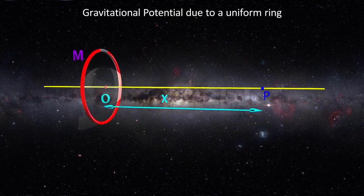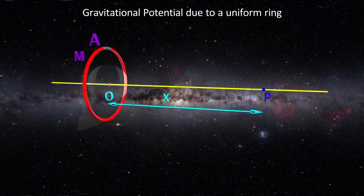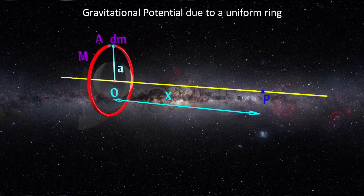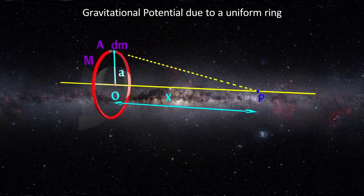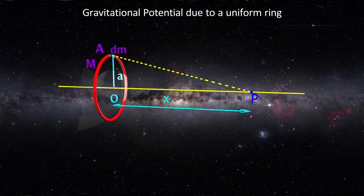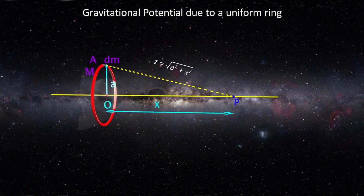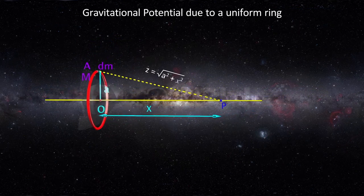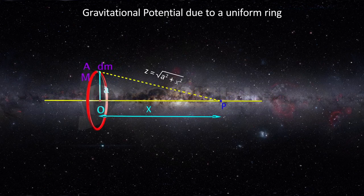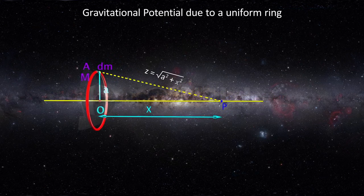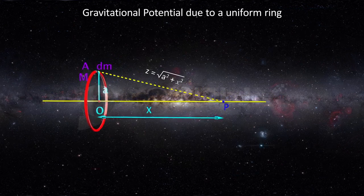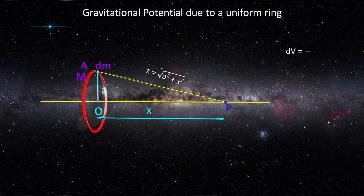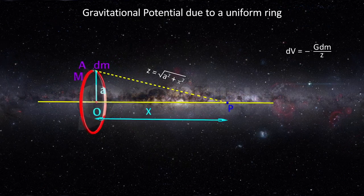Consider an infinitely small element of mass dm at a point A on the ring. The distance z of this element A from P is the square root of a squared plus x squared. The gravitational potential at P due to this element dm is minus G dm by z.